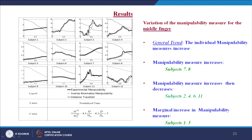The variation of the manipulability measure for the middle finger shows that the general trend is also an increase in manipulability measure, as in the case of the index finger. The manipulability measure only increases for subjects 7 and 8; increases then decreases for subjects 2, 4, 6 and 11; and marginal increase in manipulability measure is for subjects 1 and 5.